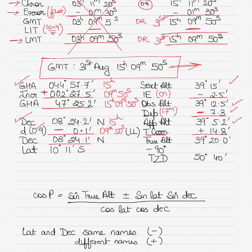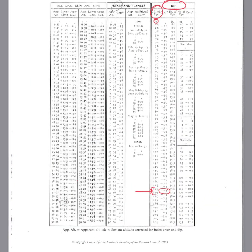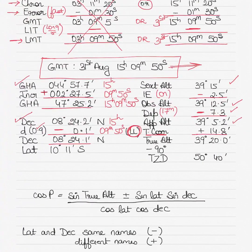We find the total correction for the sun's lower limb for 31st August 1992, using the April-to-September column. The apparent altitude of 39 degrees 5.2 minutes falls between 37 degrees 24 minutes and 39 degrees 48 minutes — no interpolation required. The lower limb correction is always positive, giving plus 14.8 minutes. Upper limb corrections are negative; lower limb corrections are positive. Applying this gives a true altitude of 39 degrees 20 minutes.